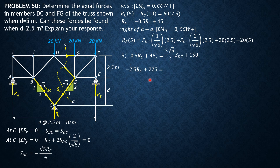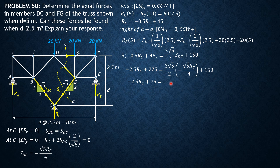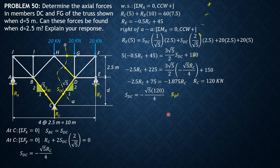We have negative 2.5 R_C plus 225 equals (3 square root of 5 over 2) S_DC plus 150. Substituting S_DC equals negative (square root of 5 over 4) R_C and simplifying: negative 2.5 R_C plus 75 equals negative 1.875 R_C. Solving gives R_C equals 120 kN. Therefore S_DC equals negative (square root of 5 over 4) times 120 — since it is negative, DC is in compression: S_DC equals 67.08 kN compression.